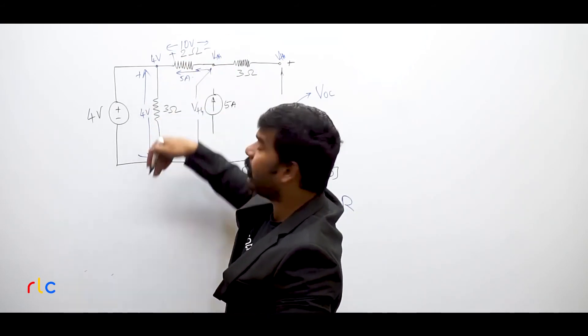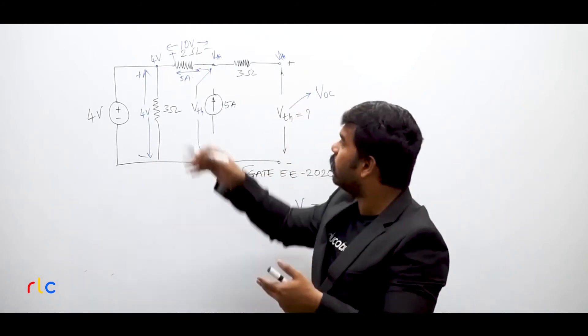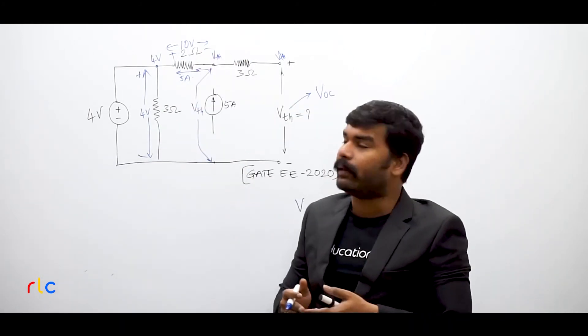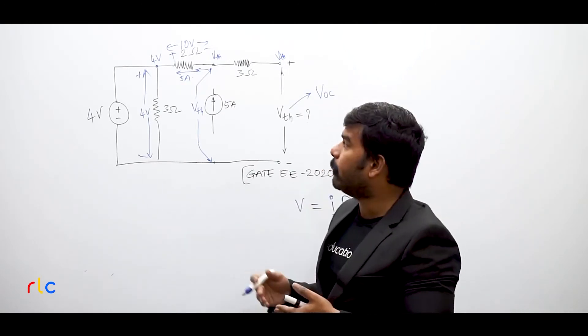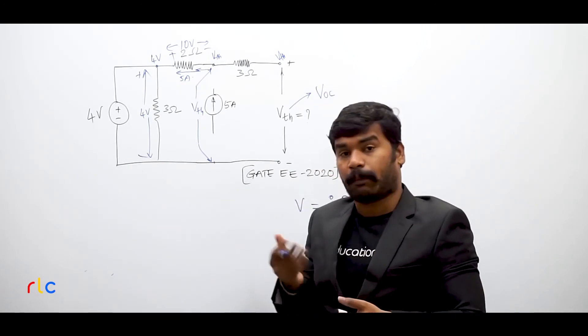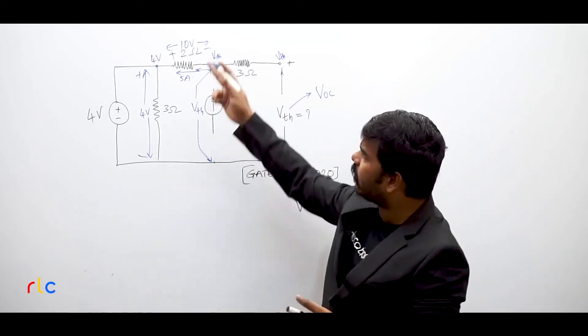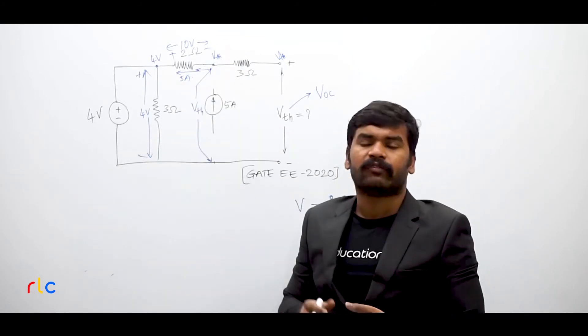That means see this opposition. Then the voltages would have been something like minus 10 plus 4. Then it would be minus 6 volts. So the possibility is minus 6 volts, or that would be 10 plus 4, 14 volts.